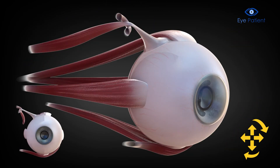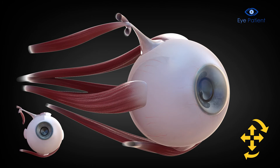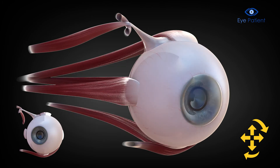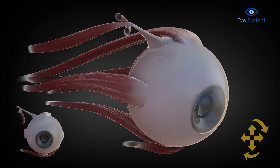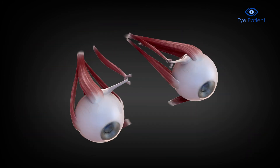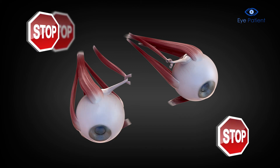All six muscles must work as a team, or otherwise strabismus, which refers to misalignment of the eyes, will result. In strabismus, the two eyes do not align in the same direction, resulting in double vision or frequent head turning to see better.